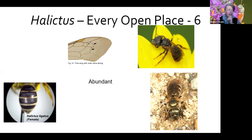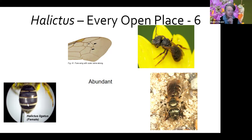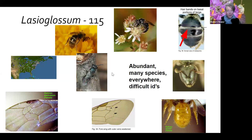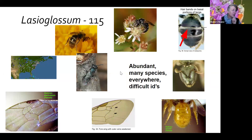A common bee you'll see around is Halictus — a type of sweat bee. There aren't very many species but they're super abundant. They have stripy waists with hair bands at the ends of their abdominal segments, as opposed to Lasioglossum, which can look very similar but has hair bands at the tops of the segments rather than the ends. Some Halictus are social and live in colonies together. They're difficult to ID to species but fascinating.